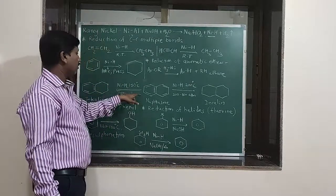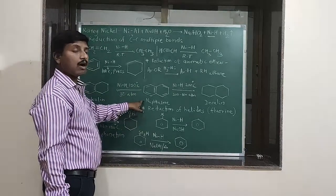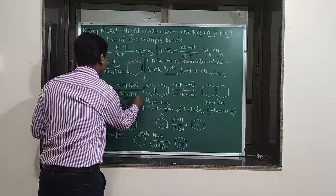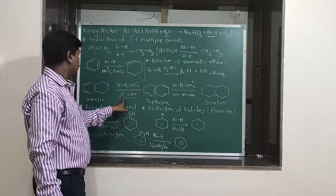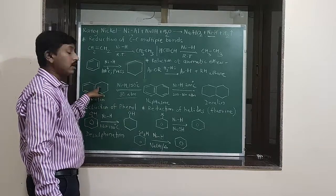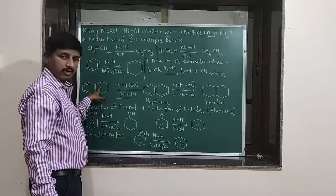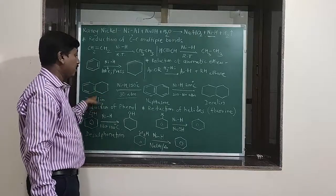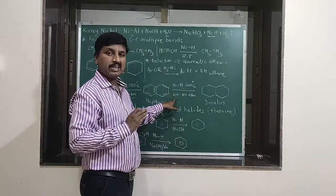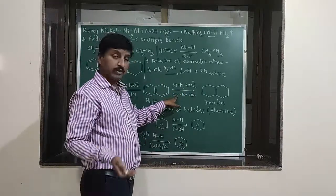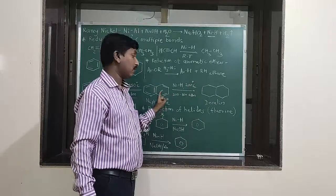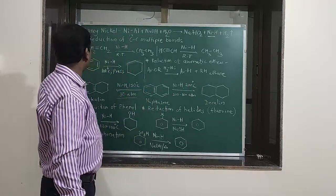Another example is naphthalene. With naphthalene, on reduction by Raney Nickel at 150 degrees Celsius and about 30 atmospheric pressure, only one ring gets reduced. However, at higher temperature around 200 degrees Celsius and higher pressure around 200 to 380 atmospheric pressure, we get decalin from naphthalene.